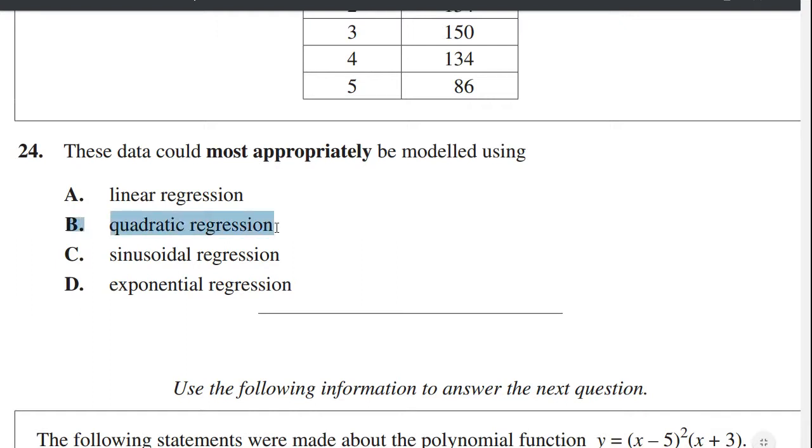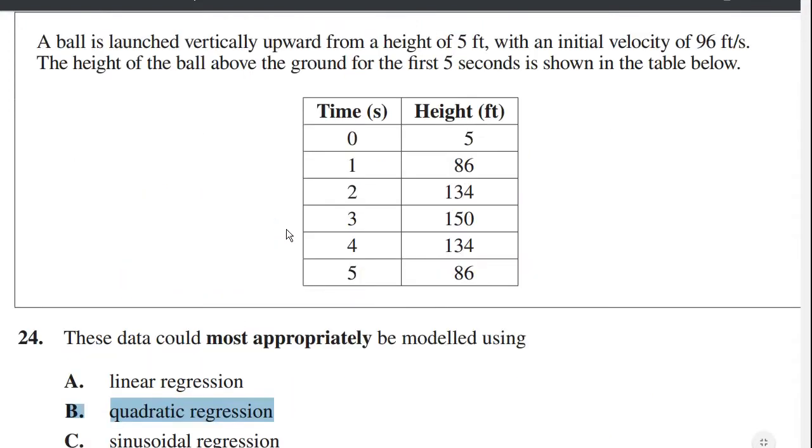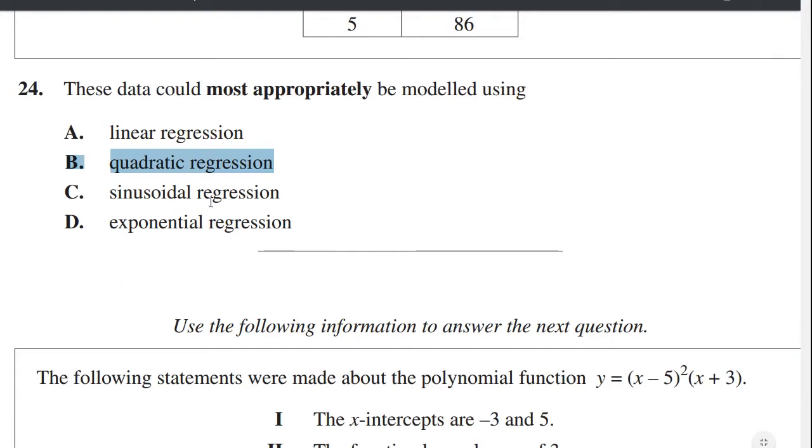The answer is B. It's a quadratic regression. We know from physics that gravity works as a quadratic relationship. There's a quadratic relationship between position and time. So the answer is B.